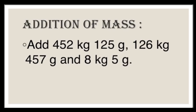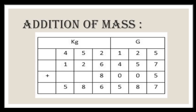Now let us learn with an example. Add 452 kilograms 125 grams, 126 kilograms 457 grams, and 8 kilograms 5 grams. So 5 grams becomes 005, and do the addition simply.